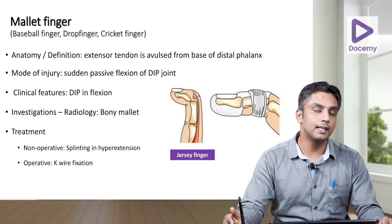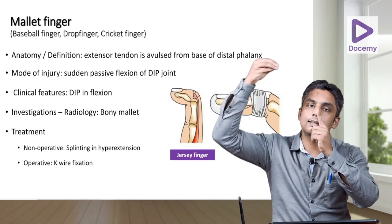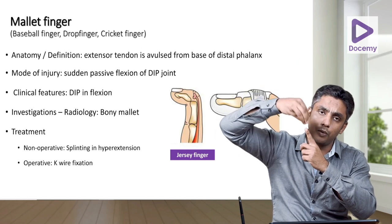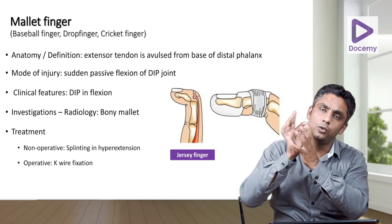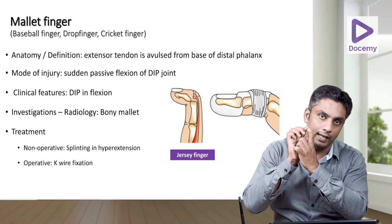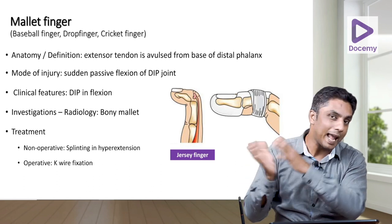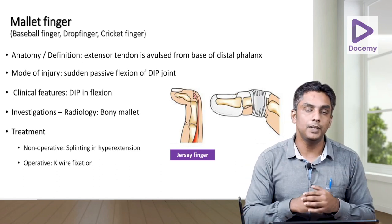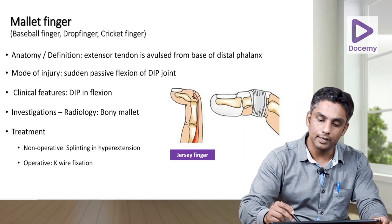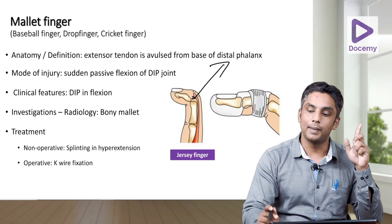In cricket, a fielder tries to catch a ball and the ball lands over his finger. Once a ball with force falls over your finger, this finger goes into hyperflexion. That sudden hyperflexion can cause the insertion of the extensor digitorum over the distal phalanx to get avulsed or even ruptured from the base of the distal phalanx, as you can see in the diagram.